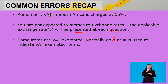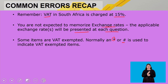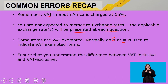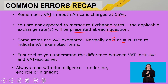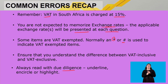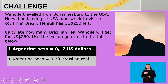Some items are VAT exempted. Normally on till slips we either use an asterisk or sometimes a hashtag sign to indicate that those items are VAT exempted. Also ensure that you understand the difference between VAT inclusive and VAT exclusive, and as I always say, read with due diligence — underline, encircle, and highlight all the important information.